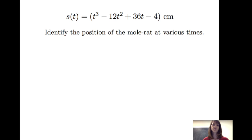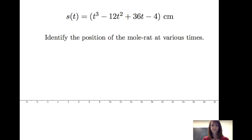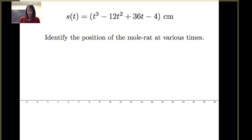Let's first consider the position function. The position function has a unit associated with it: centimeters from the nesting chamber. When s is positive the mole rat is to the right of the nesting chamber; when s is negative it is to the left. Looking at a graph of this function, if t equals zero, s of zero is negative four — the mole rat is four centimeters to the left of the nesting chamber. At time equals one, the mole rat is at 21 centimeters to the right.